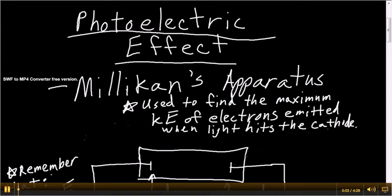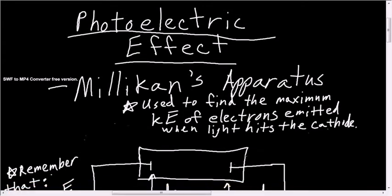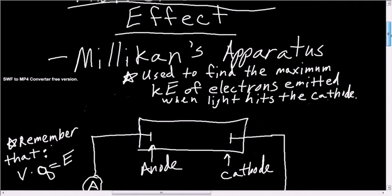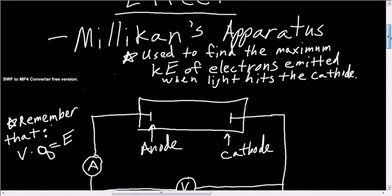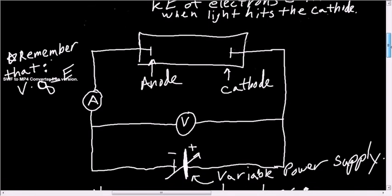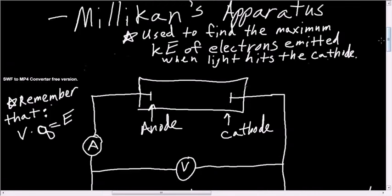This video concerns the photoelectric effect, specifically Millikan's apparatus. Millikan built this apparatus when the photoelectric effect was discovered in order to investigate the maximum kinetic energy of the electrons emitted when light hits the cathode of metal. So you want to know the maximum kinetic energy of the electrons being emitted, and so he built this device.